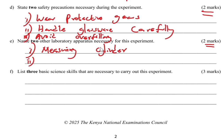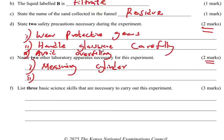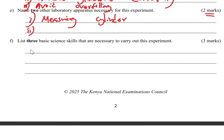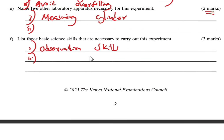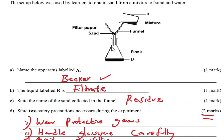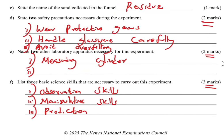Part F: list three basic science skills necessary to carry out this experiment. Number one is observation — you observe what is happening, so observation skill. Number two, you are manipulating the apparatus — taking a beaker and pouring water — so that is manipulative skills. Another one is prediction: you can tell that the water will pass through and the sand will remain without even doing the experiment. You can give any three and score those marks, completing question one for 10 marks.